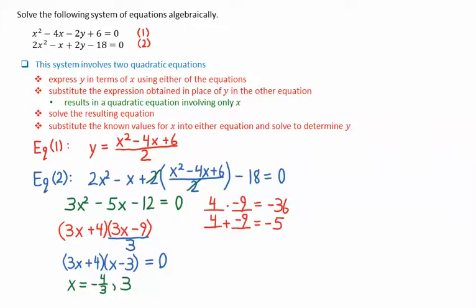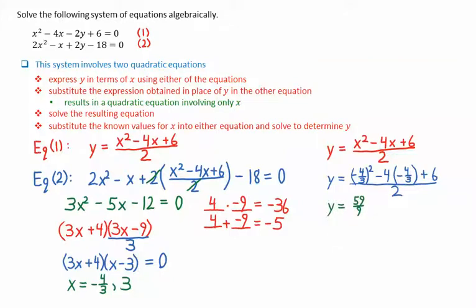We will then take these solutions for x and substitute them into either equation to solve for y. Here I will use equation 1 because I've already isolated y for equation 1. Substituting x equals negative 4 over 3, we get a y value of 59 over 9. And substituting x equals 3 gives a y value of 3 over 2.